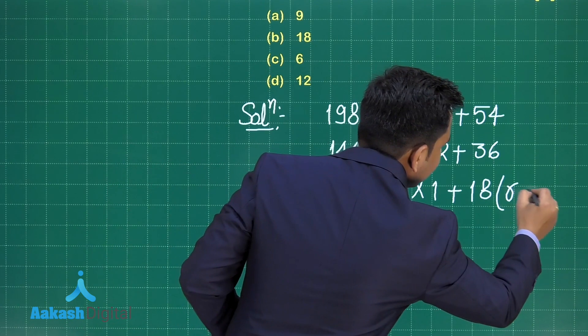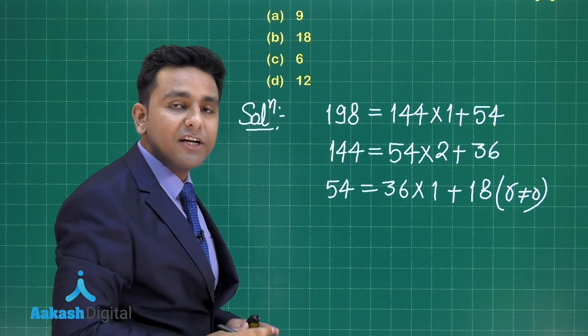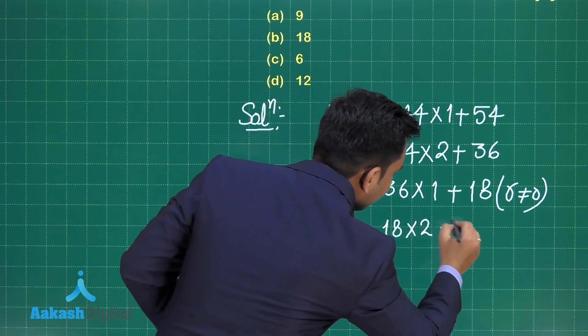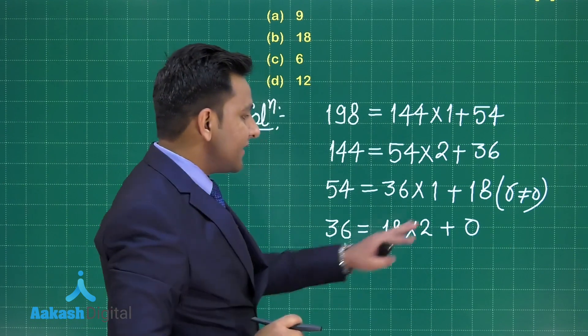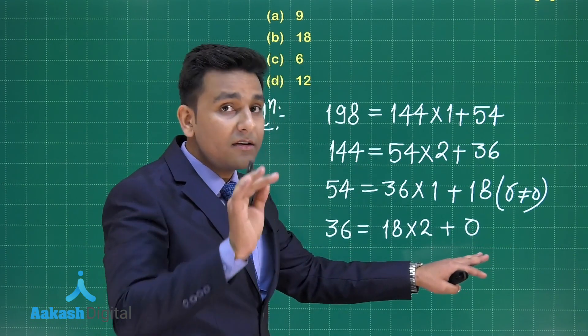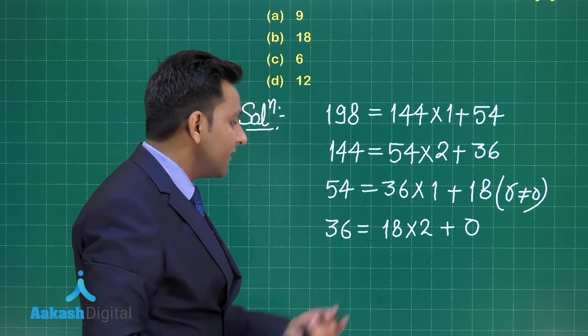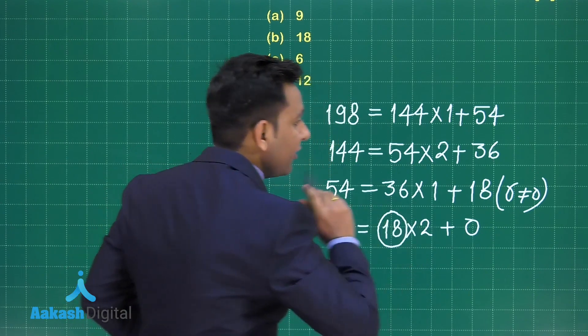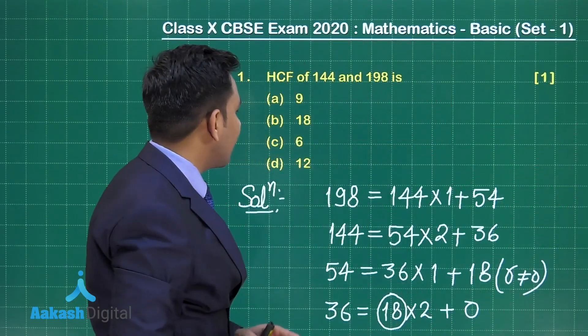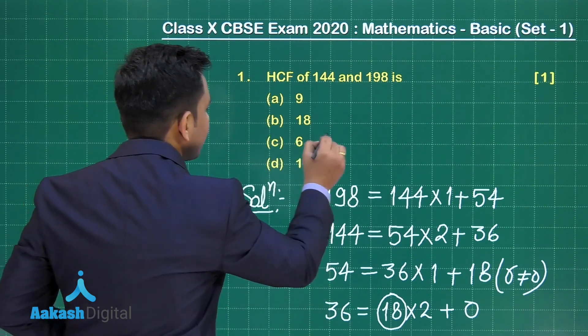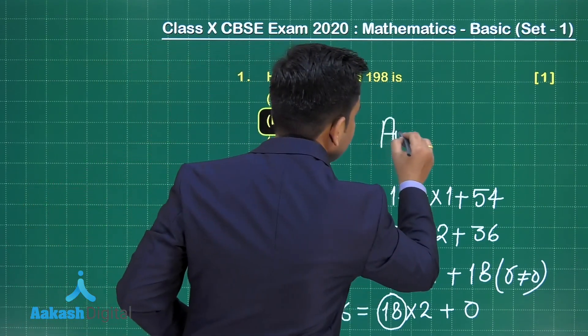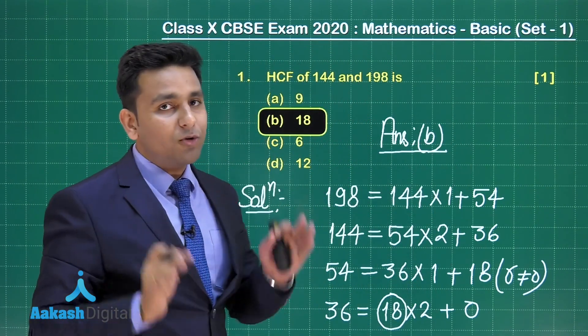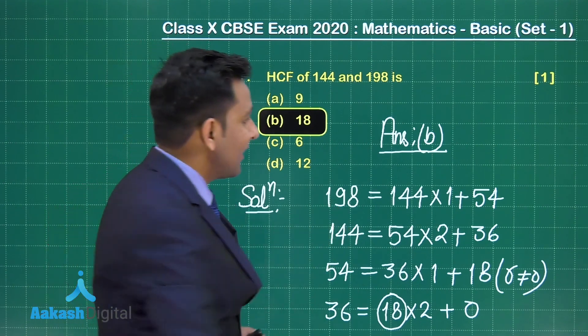Again, remainder is not equal to 0, so we proceed for the next step. 36 equals 18 multiplied by 2 plus 0. In this step, we observe remainder is 0. So we can conclude that the divisor of this last step will be the HCF of the given 2 numbers. With the help of Euclid's division algorithm, option number B is the correct choice for this question. If you have marked option B, then you get one mark. Let's go to the next question.